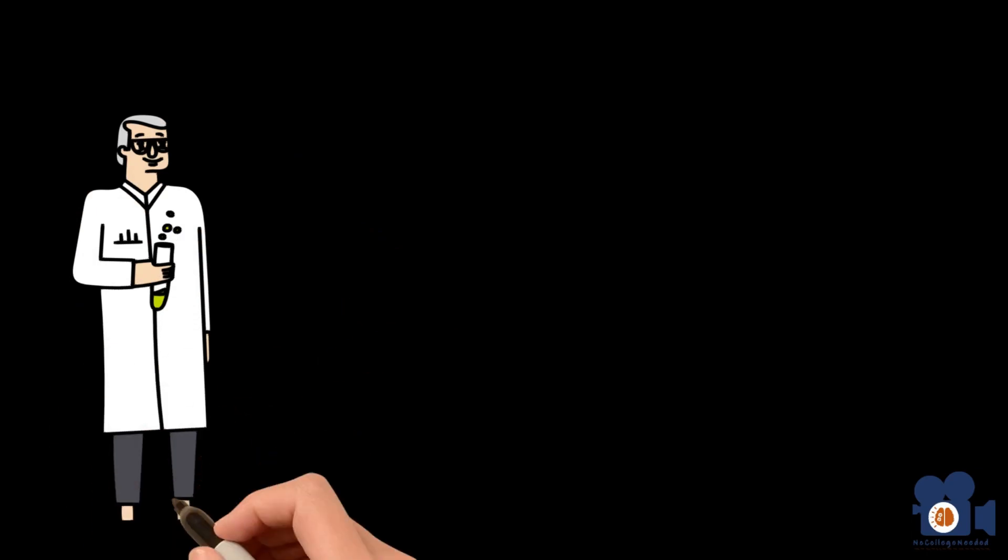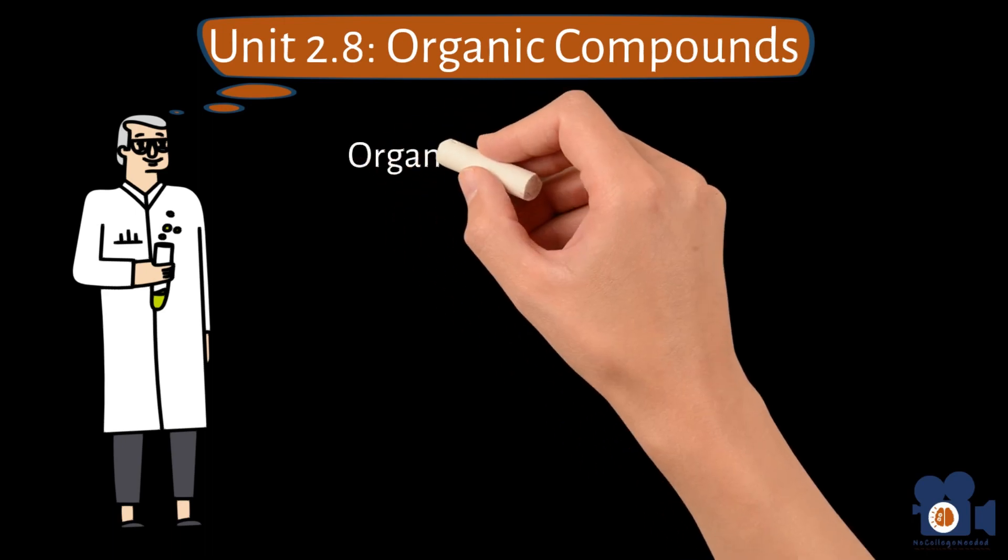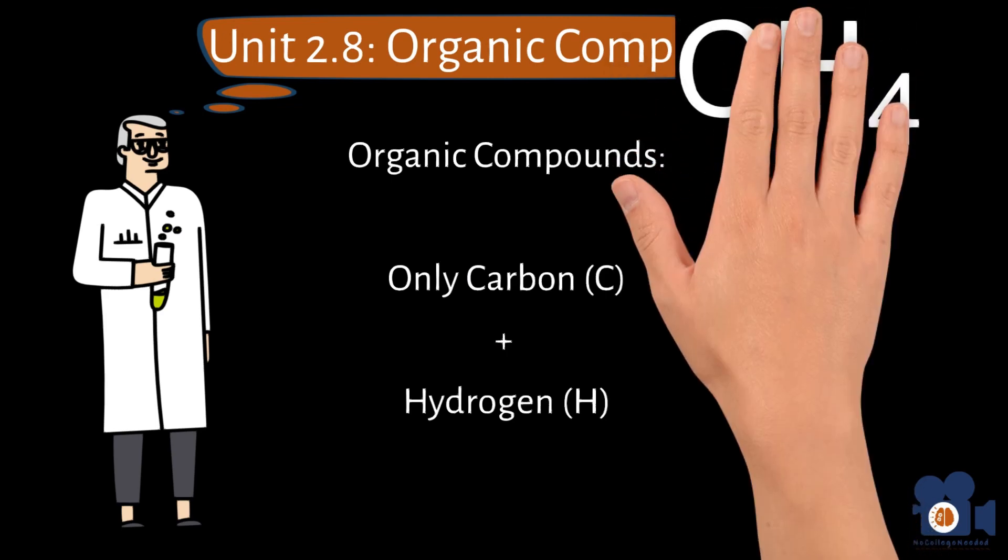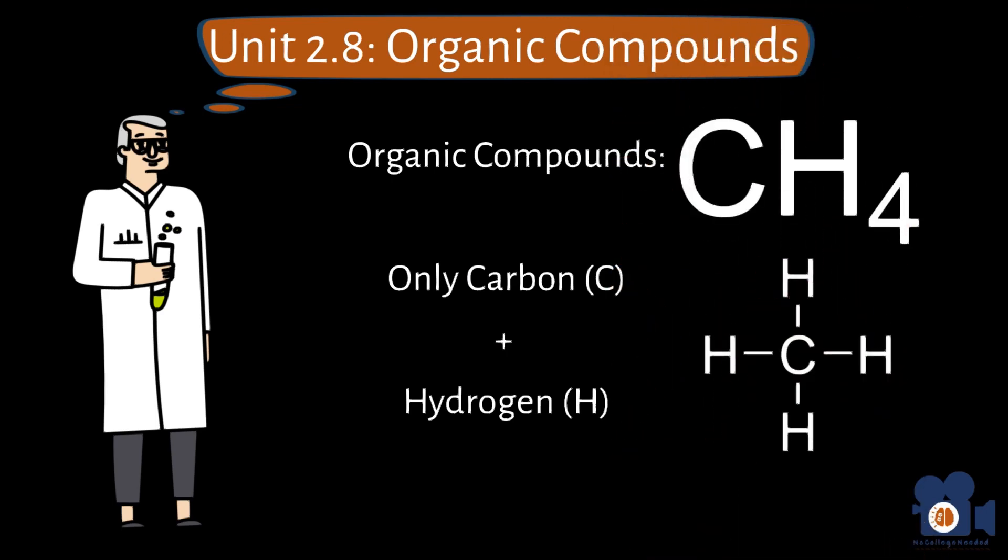Today we're delving into Unit 2.8 of the first half of General Chemistry, which introduces organic compounds. Organic compounds are classified as chemicals that contain carbon and hydrogen. These organic compounds far outnumber all other chemicals, and that is one reason why they have an entire branch of science called organic chemistry dedicated to them.